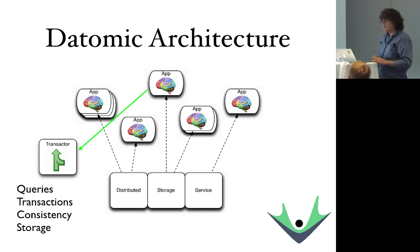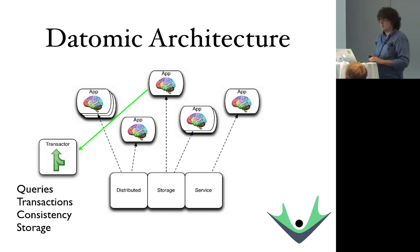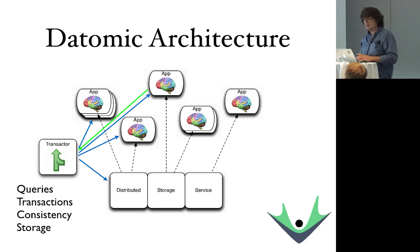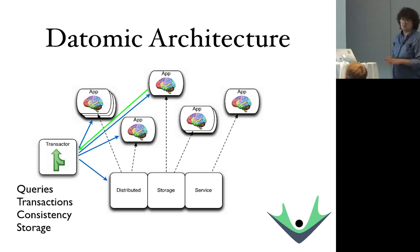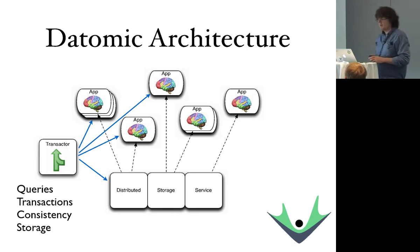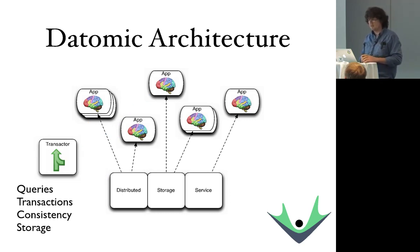This transactor only deals with writes — it doesn't handle any read load at all, doesn't answer queries. When an application has new facts, it sends them to the transactor. The transactor broadcasts this back to the other peers that are connected, and also commits to storage. So it's transactional and durable — it won't return until it's in storage. At that point novelty gets reflected back, and we have everything restored.